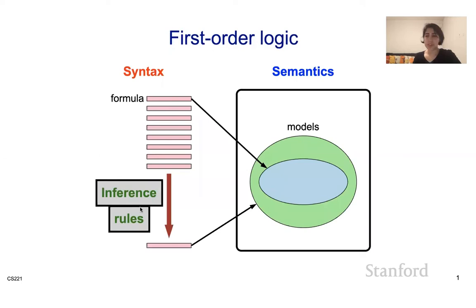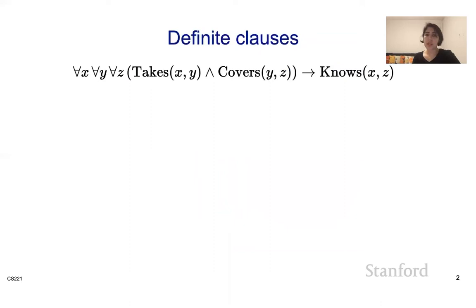If you remember, what inference rules do is they basically do symbol manipulation. So they take the syntactic form of the formulas and they have no notion of meanings. But based on the formulas in the knowledge base, they try to derive or prove a new formula by syntactically moving things around — kind of like what we've seen in modus ponens for propositional logic. What we would like to do is apply modus ponens to first order logic when we have only horn clauses.